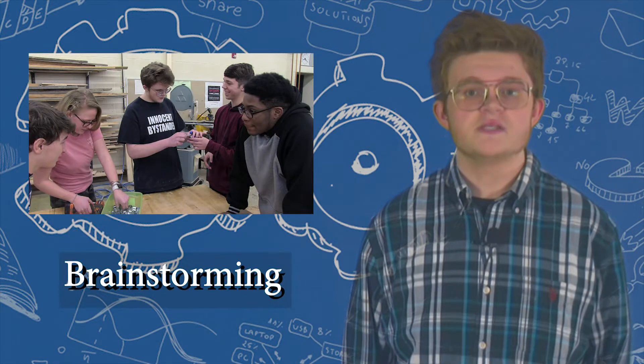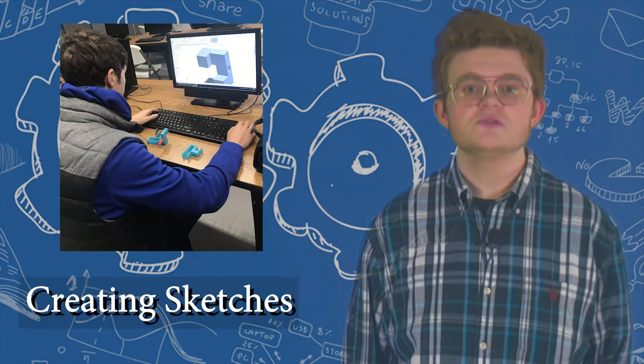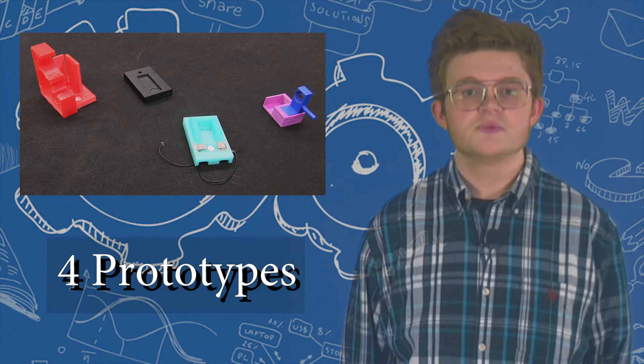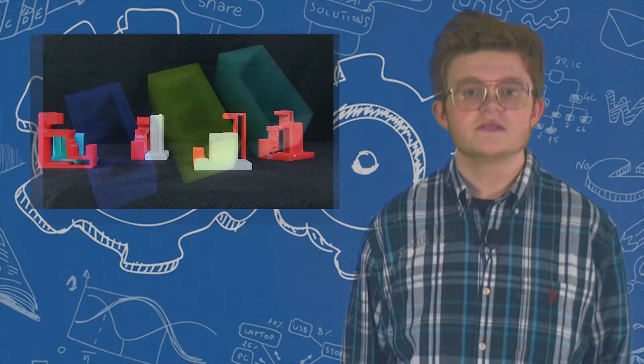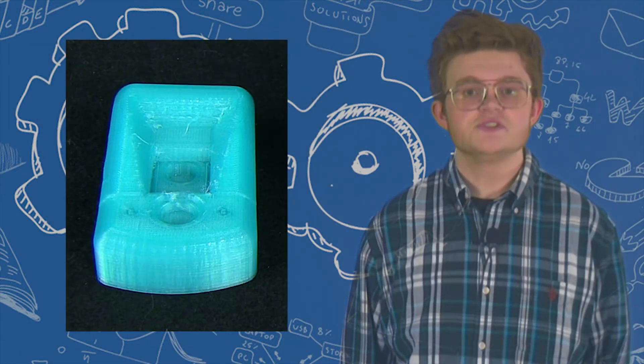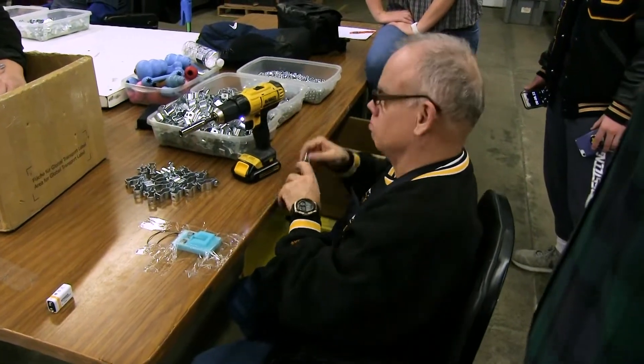We started our design process with brainstorming possible solutions, creating sketches, and finally the team members created four different prototypes. Each of the original four prototypes were uniquely different. Some were simple, others were complex. Some worked well, and some didn't. We took the best functioning prototype, a simple jig, to ProPak for testing and evaluation by Bobby.